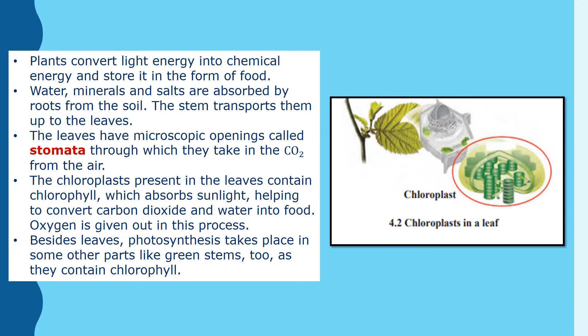The chloroplasts present in the leaves contain chlorophyll, which absorbs sunlight to help convert carbon dioxide and water into food. Oxygen is given out in this process. Besides leaves, photosynthesis also takes place in other parts like green stems which contain chlorophyll — but the stem must be green.